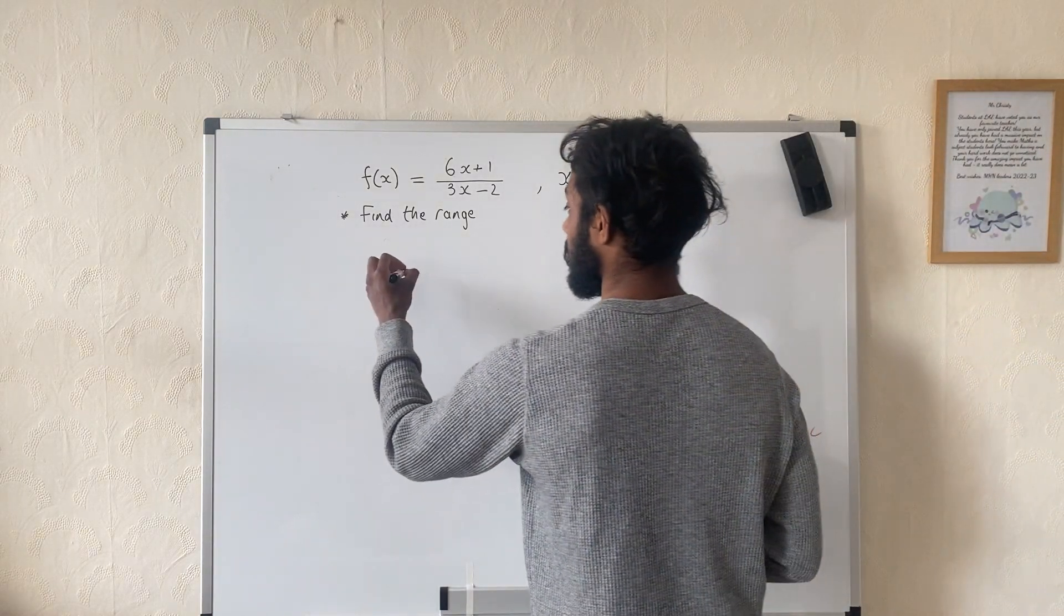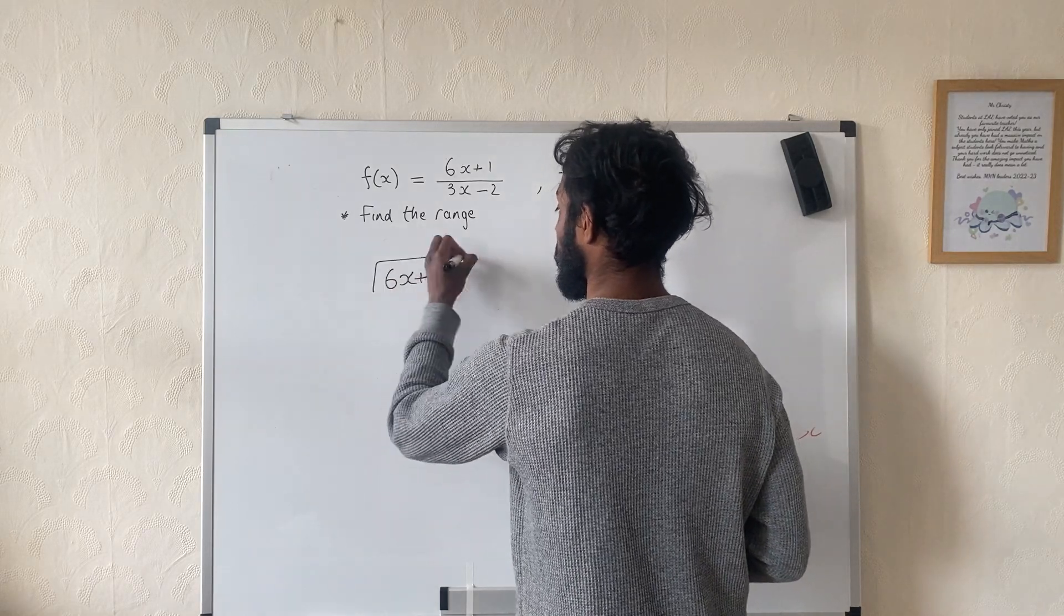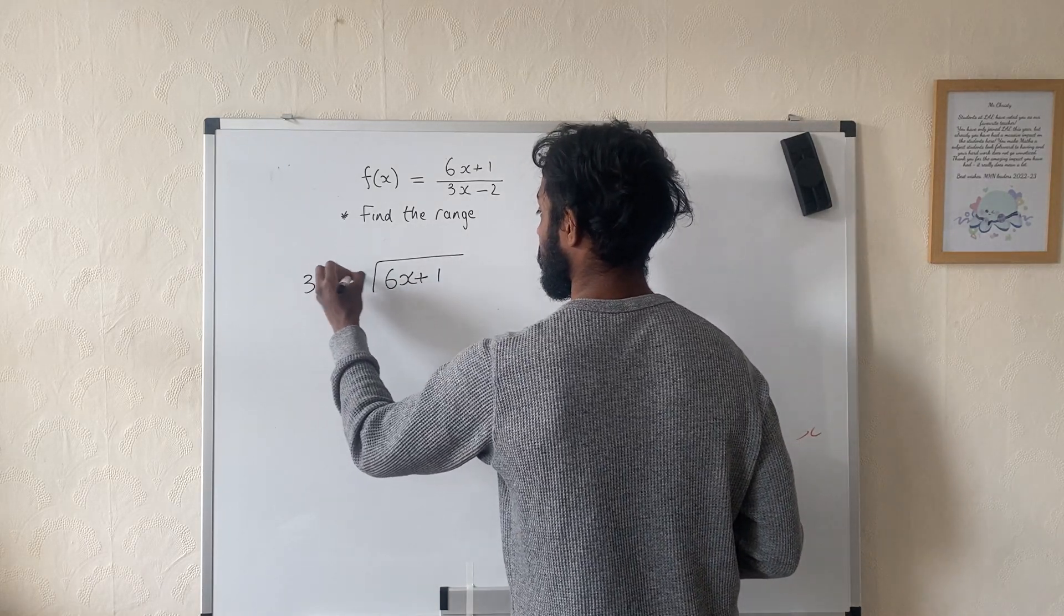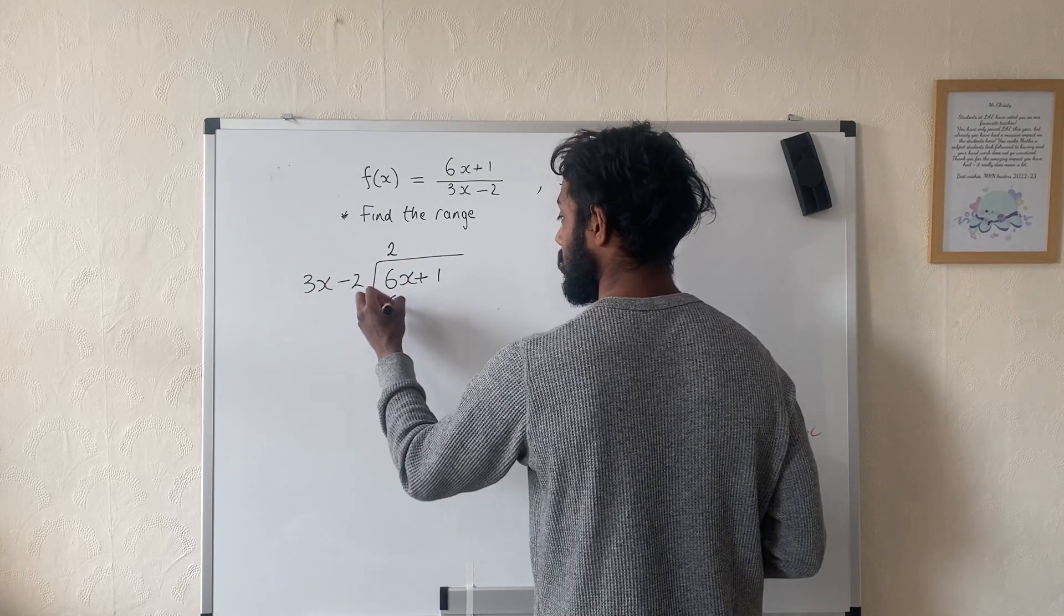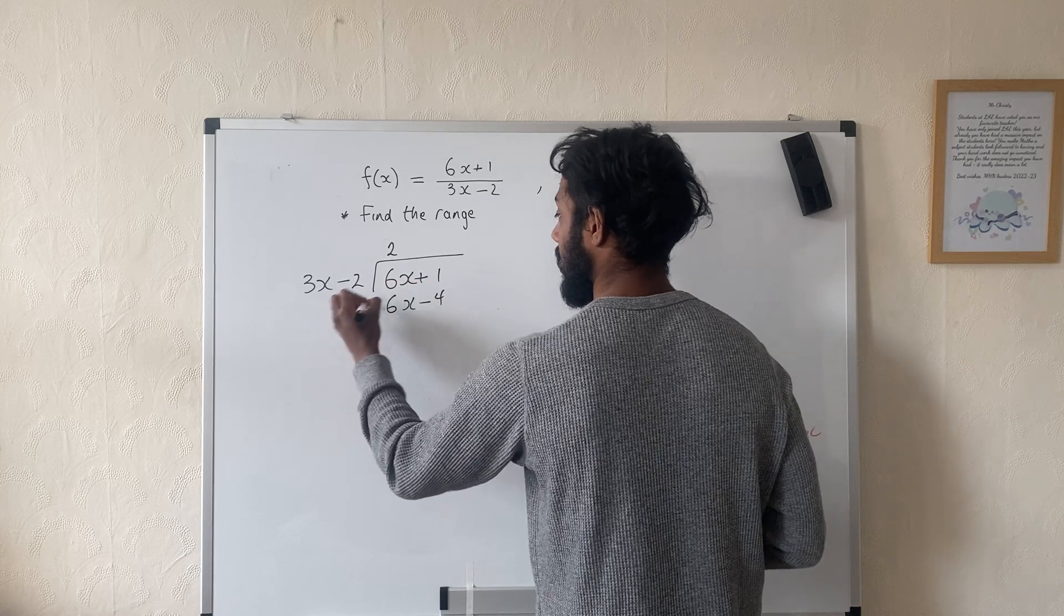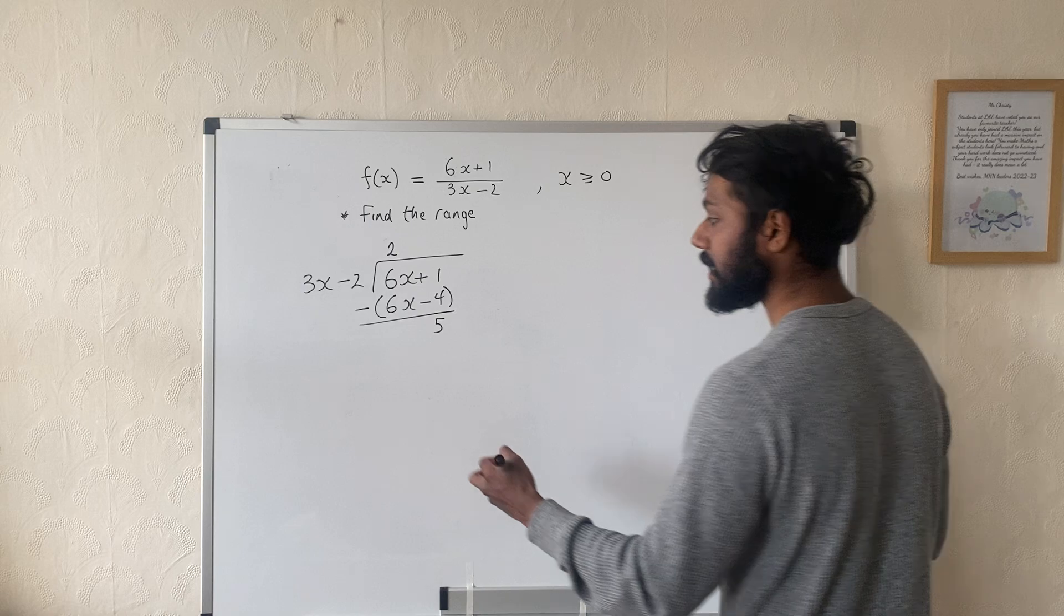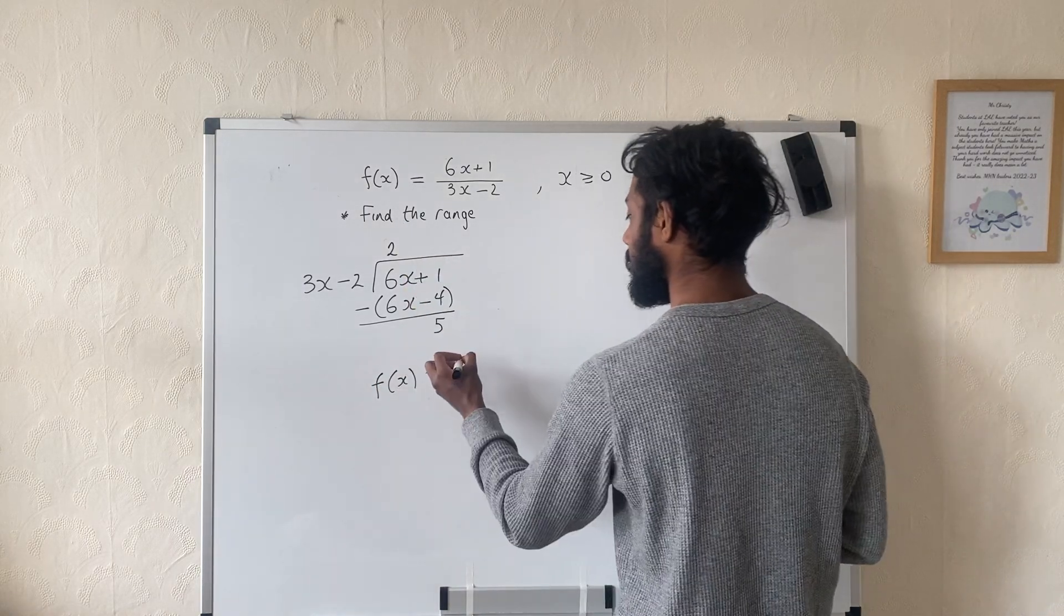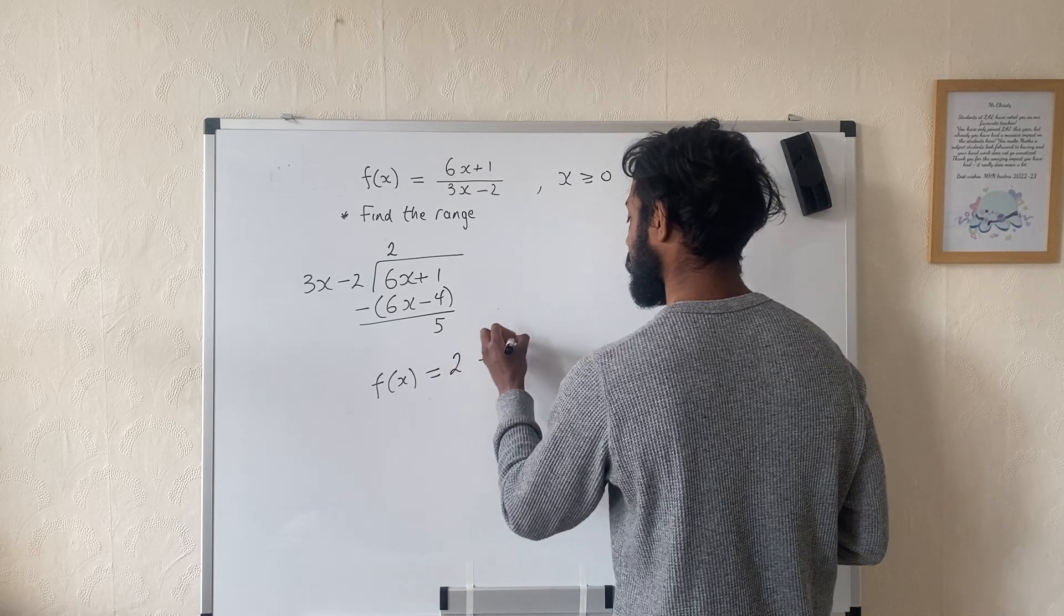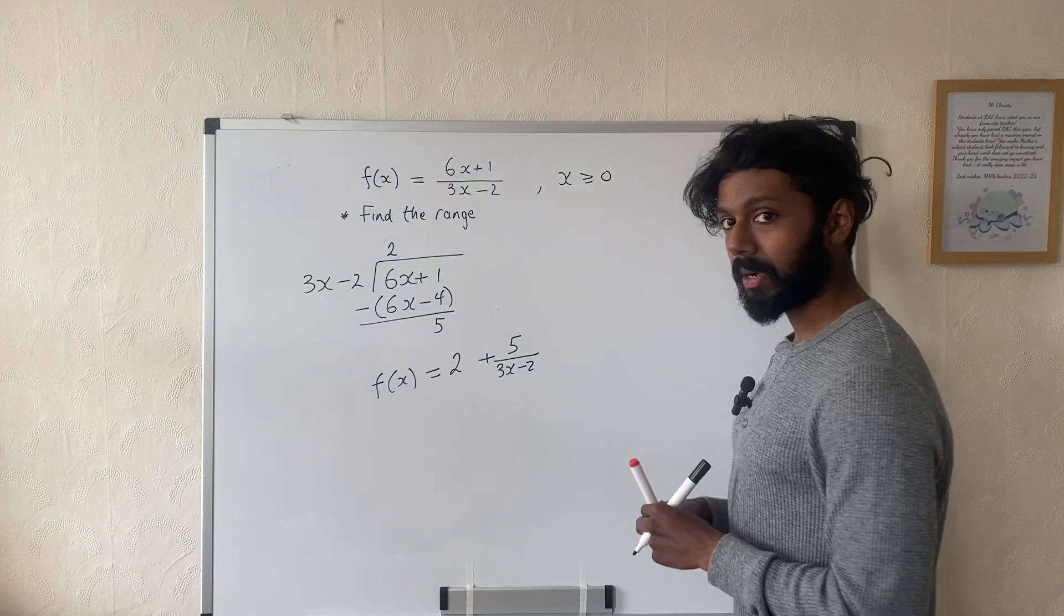So that involves dividing 6x plus 1 by 3x minus 2. 6 divided by 3 gives me 2. I multiply 2 by 3x minus 2, it can be 6x minus 4. I subtract it to get remainder 5. That means I can rewrite f(x) as 2 plus the remainder divided by the original thing I divided by.